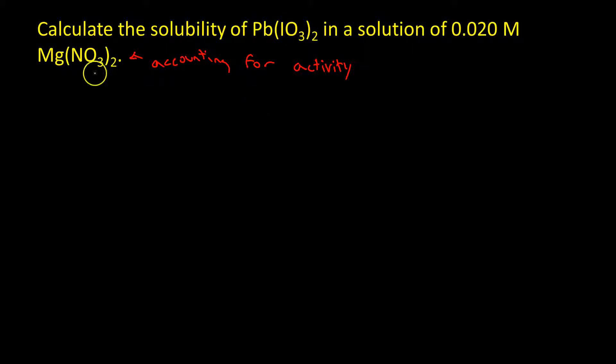So what we'll do is we need to figure out the reaction that we're talking about. Lead iodate is a solid which dissolves into lead 2 plus and 2 iodates, which have a single minus charge. The Ksp, which would be found on a table and I will give this information on an exam, is 2.5 times 10 to the minus 13. This Ksp is fairly small, so we would consider this a sparingly soluble salt.